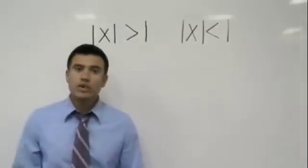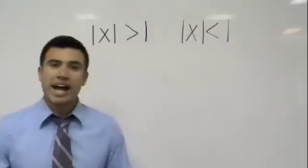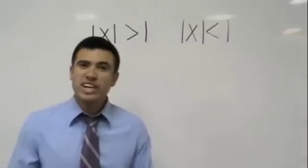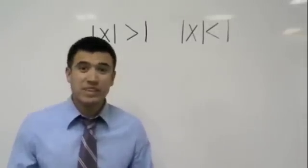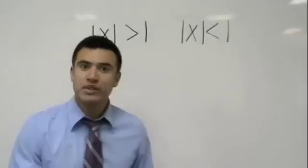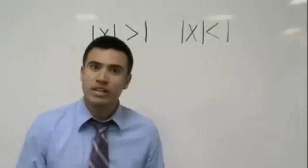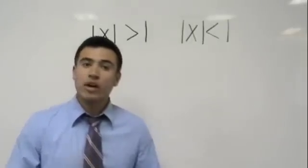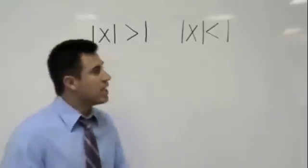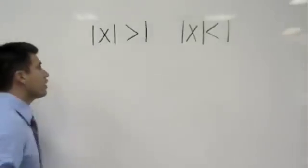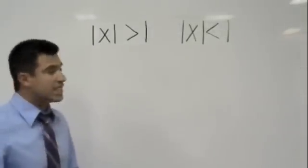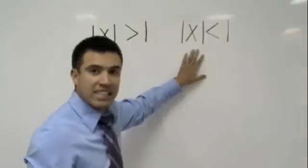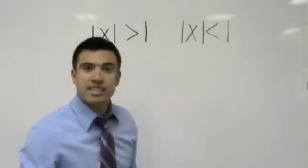In this lesson, we're going to talk about absolute value inequalities. We've got two things that don't sound too nice together — absolute value and inequality. But I'll show you a trick to help us find out what the answers will be. Here I have the absolute value of x is greater than 1, and here I have the absolute value of x is less than 1.